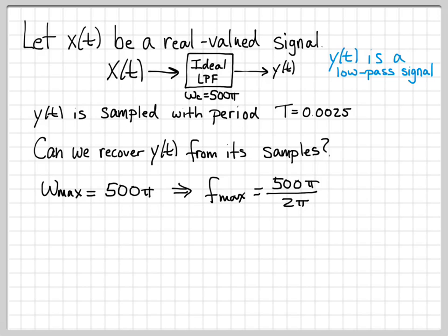From this, we can go ahead and compute what the largest linear frequency is. We know how linear and radial frequencies are related, it's just by a factor of 2 pi. So we can compute f max equals 500 pi over 2 pi, which gives us a value of 250 hertz.